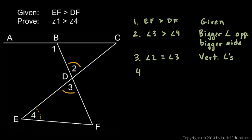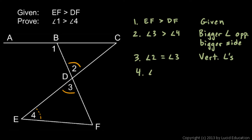Step 4. If angle 2 is equal to angle 3, and angle 3 is greater than angle 4, I can substitute angle 2 in for angle 3 in that statement, because angle 2 is equal to angle 3. That gives me angle 2 is greater than angle 4. The reason I can do that is substitution.